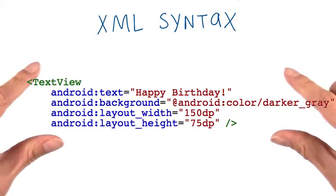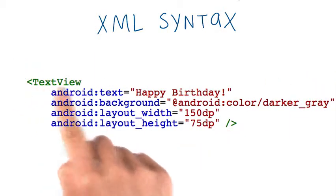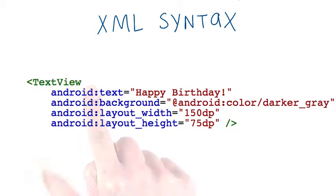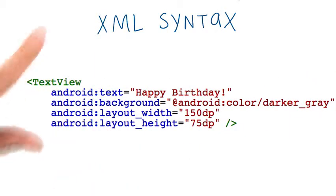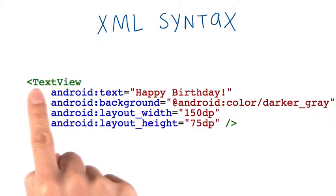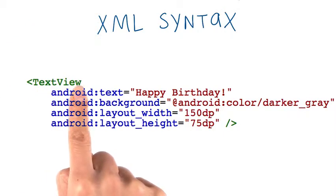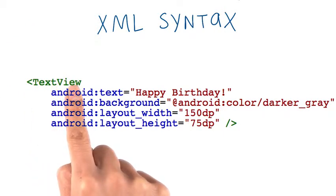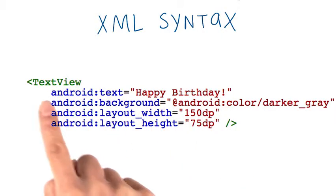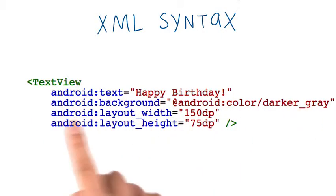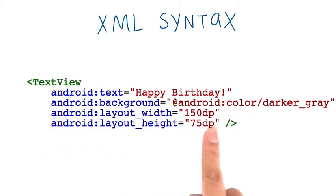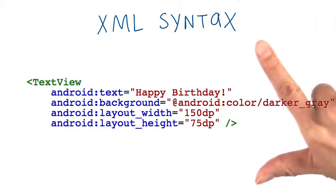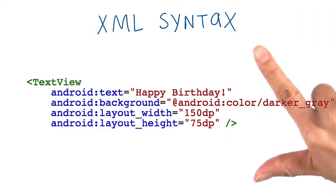This is the code for the XML element called TextView. We always start with an opening angle bracket followed by the view name. This could be ImageView, Button, or any other type of view. Then we have a list of attributes here, one per line. And then we have a forward slash and then a closing angle bracket.